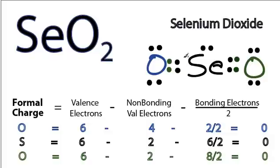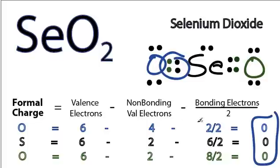So by adding this double bond here, I now see that my formal charges are all 0. I've recalculated all these numbers. Because of that, that tells me that this is the best Lewis structure for SeO2. This is Dr. B, and thanks for watching.